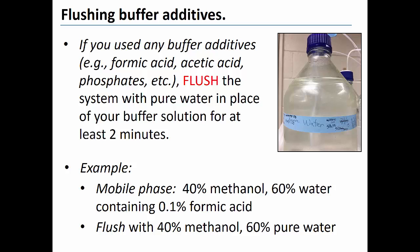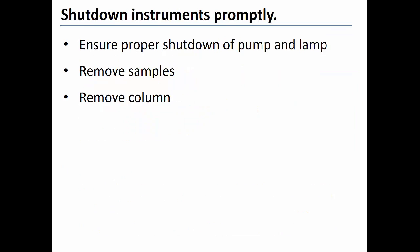Additional essential shutdown steps include turning off the pump, turning off the lamp, removing sample vials from the auto sampler tray, and removing your column.